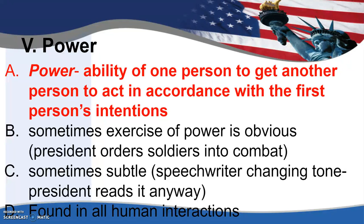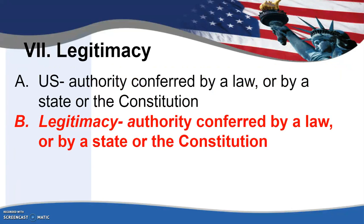We have to understand some terms in order to get through the rest of the year. When we're talking about power in politics — political power — we're looking at the ability of one person to get someone else to act in accordance with your actions and intentions. Sometimes this is an obvious exercise of power, like the president ordering soldiers into combat. It can also be subtle, like a speech writer who changes the tone of a speech and the president reads it anyway — even though there is no obvious power being employed, that speech writer is exerting power over the president. This issue of power is found within all human interactions anywhere in society, not just in politics.